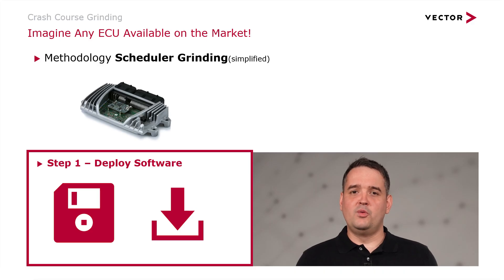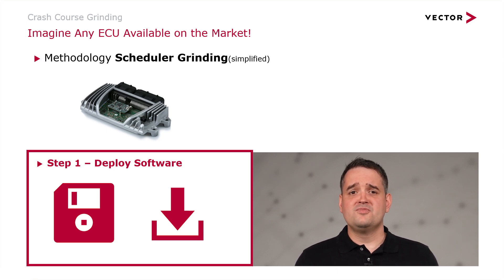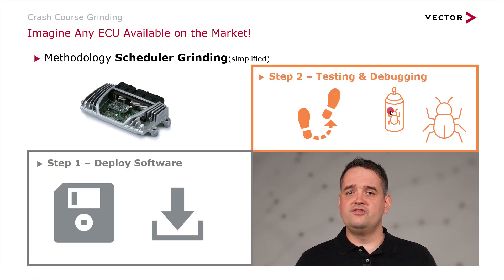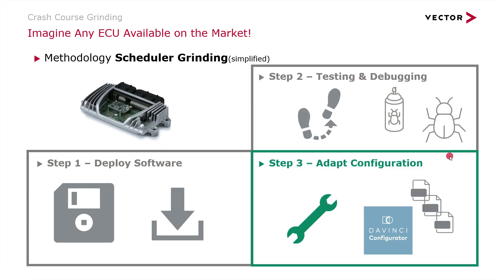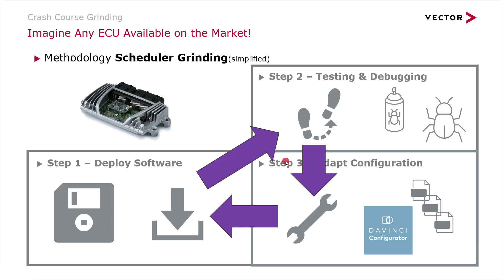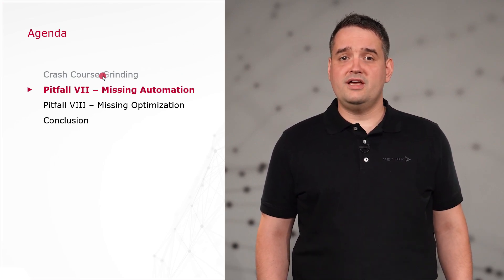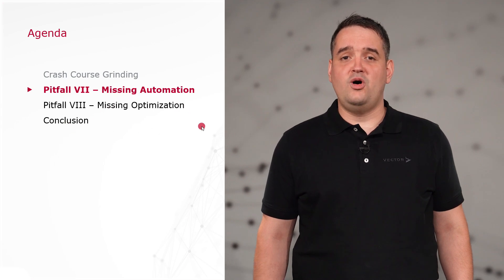Let's jump directly to the automotive market and the methodology of scheduler grinding. As step one you have your ECU and you deploy your software on it. Afterwards you start testing and debugging. You may identify issues and as step three you resolve them by adapting the configuration in DaVinci Configurator 5. You deploy the software again and repeat this process over and over. So let's talk about two timing pitfalls: missing automation, and the missing chance of optimization.